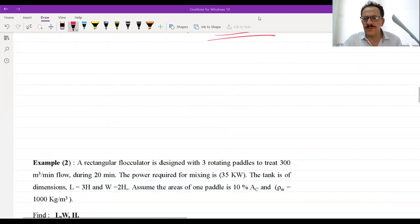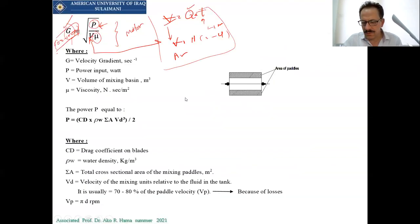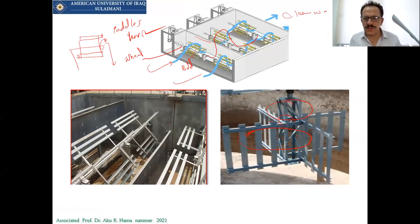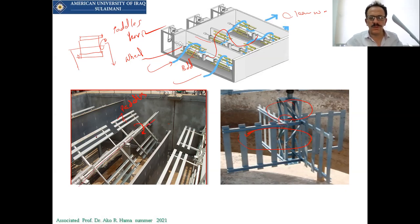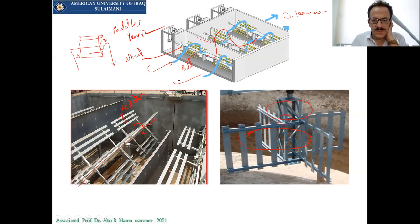The flocculator tank has paddles that are going to be rotated on shafts. We have three shafts. We need to know how much is the power P for this tank, and how much are the dimensions of the tank. The cross-sectional area of the tank is H times L.